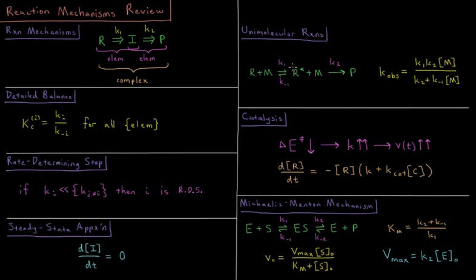We look at the Lindemann mechanism for unimolecular reactions which says that when a unimolecular reaction occurs of a single reactant molecule going to a single product molecule, the reactant will first collide with some collision partner forming what is called the activated complex R star and then the activated complex will react to give our product.